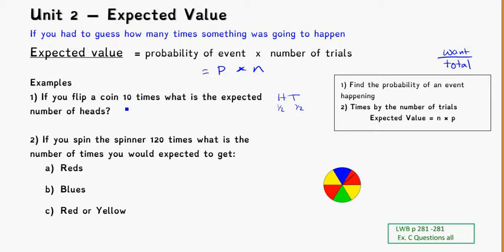So if we flip a coin ten times, the probability of getting a head is going to be one half times ten, and that gets us five heads. So here we're looking for values - if I flip a coin ten times, I expect to get five heads.